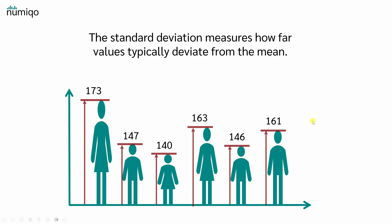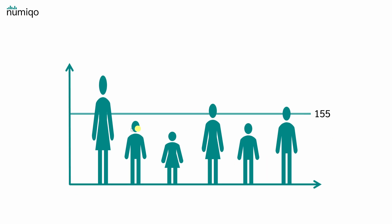The standard deviation measures how far values typically vary from the mean. So we need to calculate the mean of our data first. In our case the mean is 155. By definition, greater spread around the mean means a larger standard deviation and less spread means a smaller standard deviation.